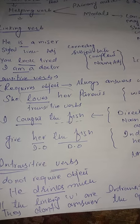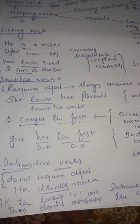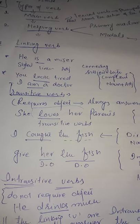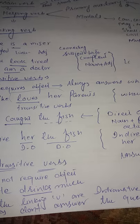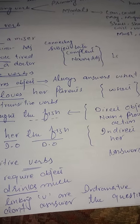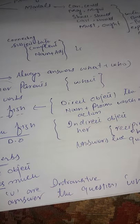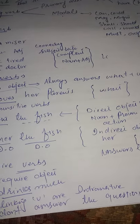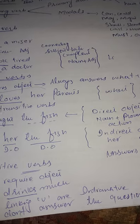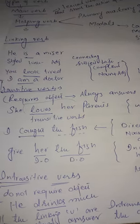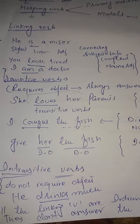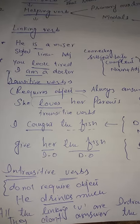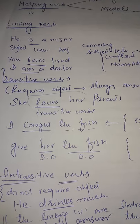Transitive verbs are those verbs which require an object, and they will always answer the question 'what' or 'who'. When the action shifts from subject to object — when the action is performed by the subject — this is called a transitive verb.